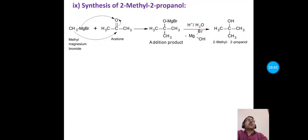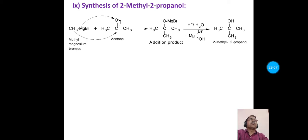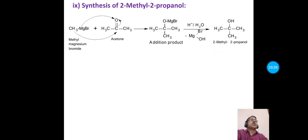The next application of methyl magnesium bromide is synthesis of 2-methyl-2-propanol (tertiary alcohol). Methyl magnesium bromide is treated with acetone, forming an addition product. Upon treatment with dilute acid, hydrolysis gives 2-methyl-2-propanol, a tertiary alcohol. The methyl group attaches to the electron-deficient carbonyl carbon of acetone, MgBr attaches to the oxygen, and after hydrolysis, MgBr(OH) is released as a side product.